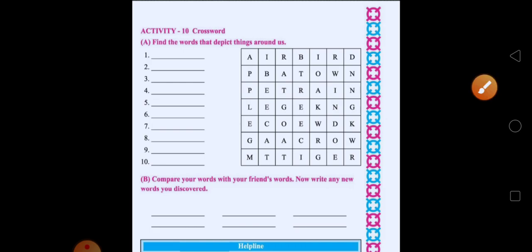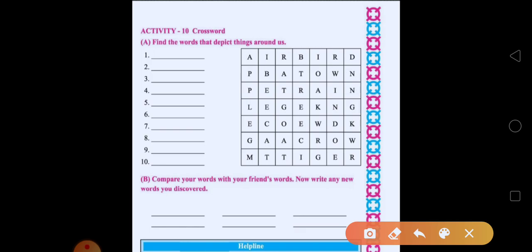In a first row, we can see the word air. Right? In a third row, we have word rain. In a fifth row, have you seen a word crow? Right? In a last row, we have word tiger.